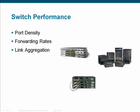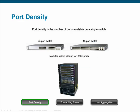One of the most important features that must be considered when choosing a LAN switch is performance. Characteristics such as port density, forwarding rates, and link aggregation capability will be more or less important depending on where in the hierarchy a switch will be deployed. Port density is merely the number of ports that a switch has, ranging from 24 ports in smaller fixed configuration switches to many thousands of ports in enterprise-level modular switches.